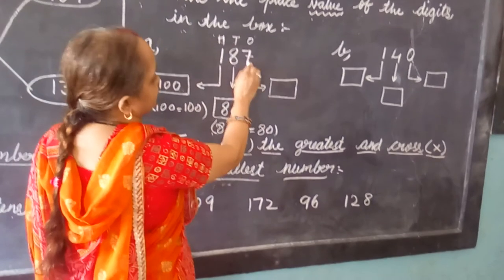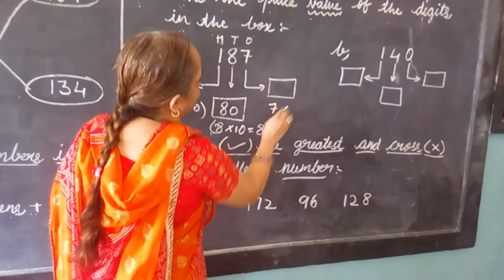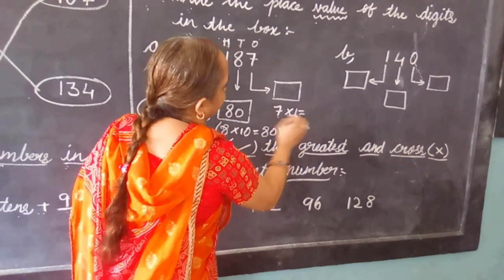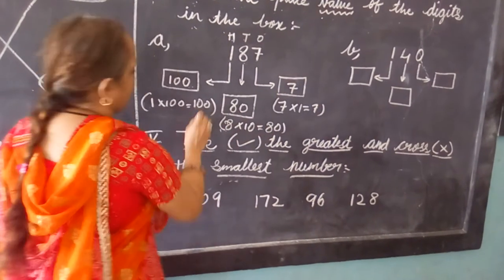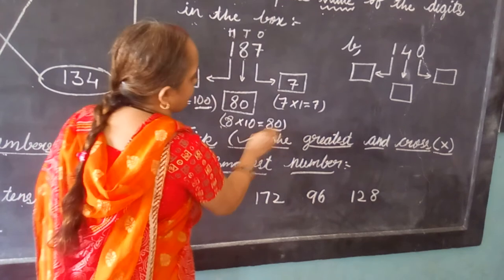Now next one given is 7, so 7 multiplied by 1, 7 multiplied by 1 is 7. We are going to write our answer is 7. This is our answer.